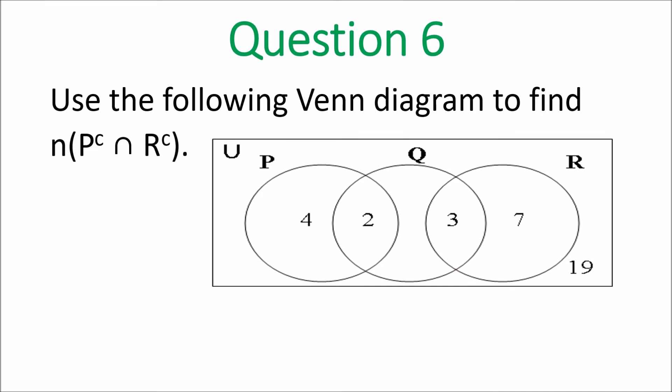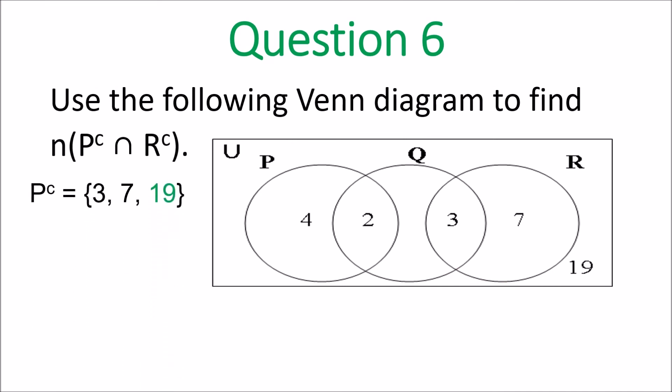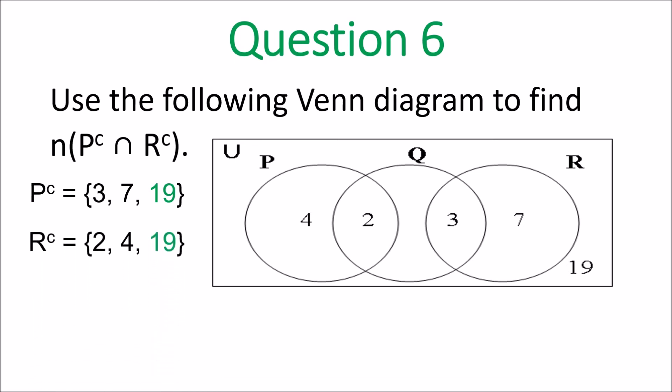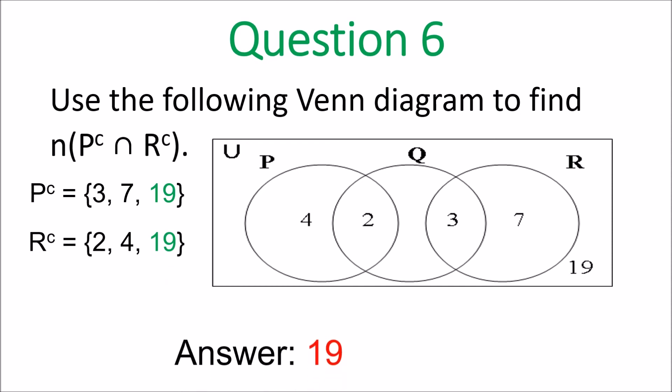Question 6. What's not in P is 3, 7, 19. What's not in R — the complement is what's not in it — is 2, 4, 19. What's common? The number in green. So the number for that intersection is 19, and since intersection means what's common, it's 19.